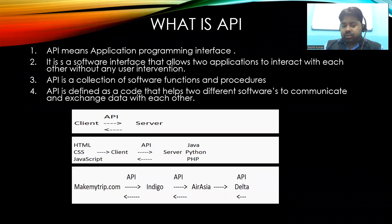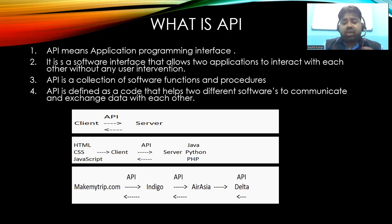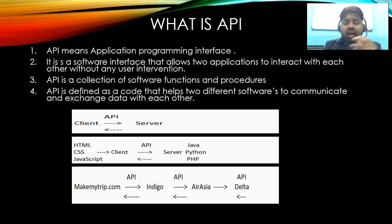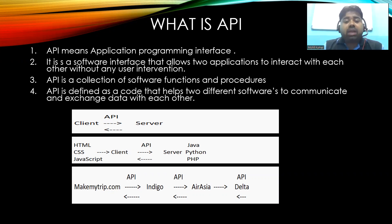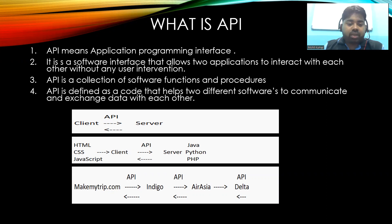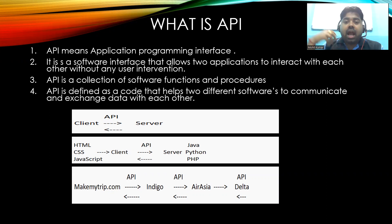Here in the diagram, MakeMyTrip is your client built on HTML and CSS. When you search, it hits the server and you get the response with all the information. This is called your API. You can use these multiple examples to explain API very well in front of an interviewer.